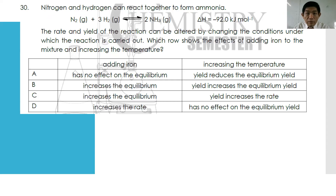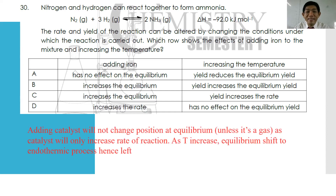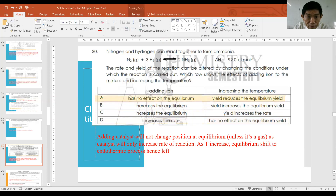Number thirty: for N₂ + 3H₂ → 2NH₃, ΔH = −92 kJ/mol, which shows the effect of adding iron catalyst and increasing temperature? Adding iron (a solid catalyst) does not influence the position of equilibrium — answer A is correct for catalyst part. Increasing temperature causes equilibrium to shift toward the endothermic direction, which is the backward reaction, therefore decreasing the yield. The best answer is A.